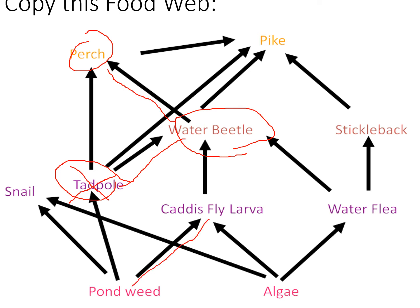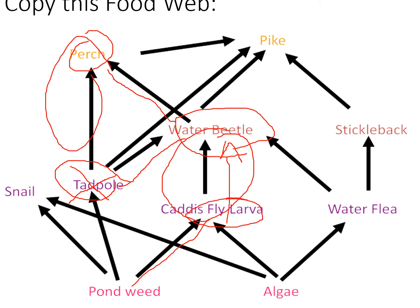...caddis fly larvae might increase, and therefore water beetles might get more food. So there's a potential argument that water beetles would decrease for two reasons, or they might stay the same because the caddis fly and water beetle relationship might offset the other factors. But I'd normally say they're most likely to decrease because of increased predation and decreased food supply.